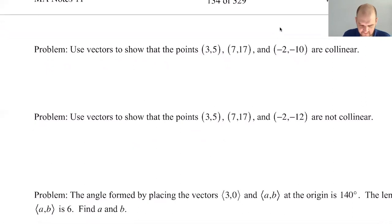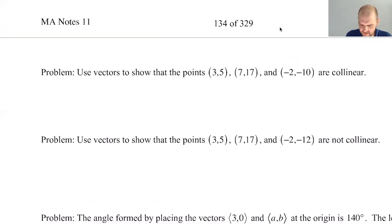So first problem, use vectors to show that the points (3,5), (7,17), and (-2,-10) are collinear. So this is kind of an interesting idea. And what I'm basically going to do is I'm going to say, if I have three points, so let's say that they're not collinear, I guess. And I draw my vectors.